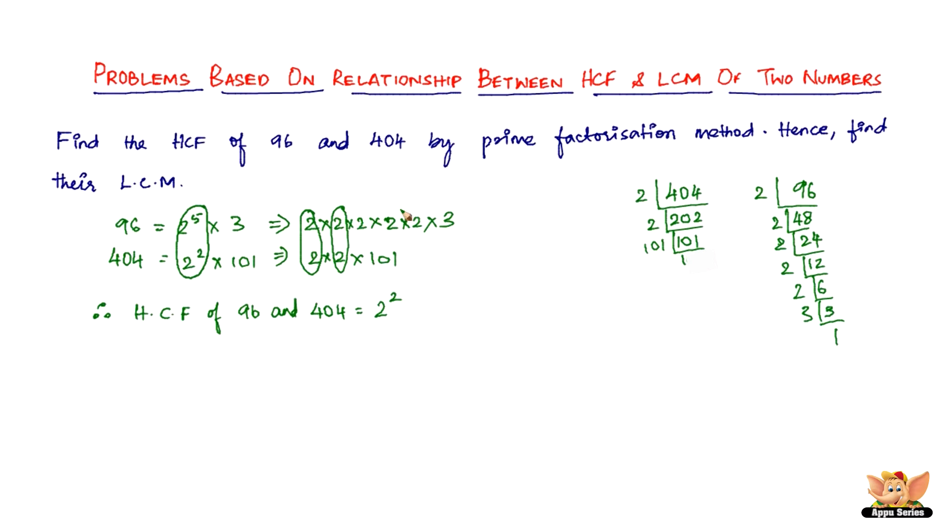If these twos have to count, say for example it becomes 2 times 2 is 4, 4 times 2 is 8, 8 times 2 is 16, then 32. Will 32 be able to divide 404? It can divide 96 no doubt, but can it divide 404? No. So only 4 can divide both 96 and 404. That is why the HCF of 96 and 404 is just 4.